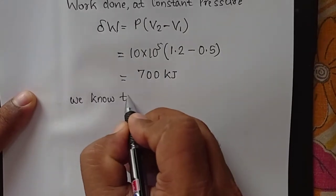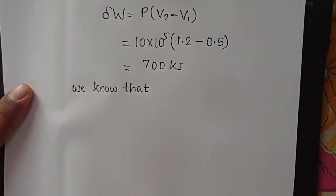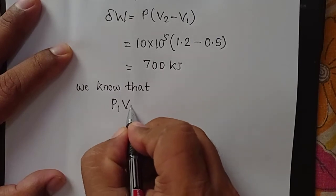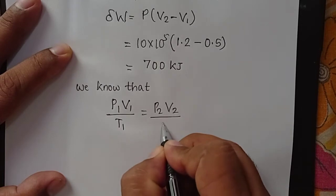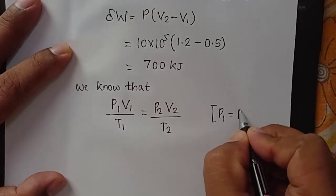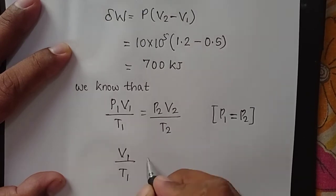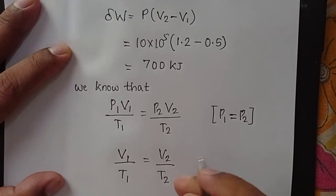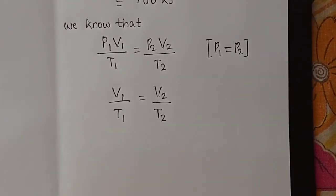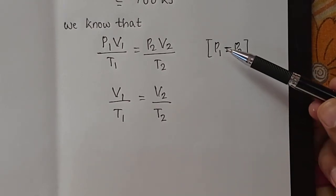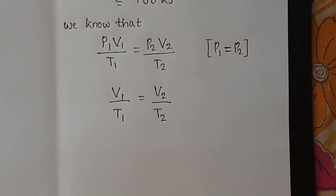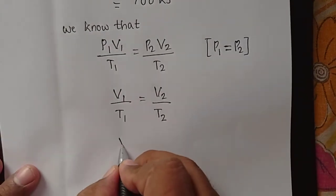Next, use the PVT relationship to find T2. The general equation is P1V1/T1 equals P2V2/T2. Since P1 equals P2 for a constant pressure process, this simplifies to V1/T1 equals V2/T2. For the first two problems, always write the generalized equation first, then apply the constant pressure condition to get the simplified form.